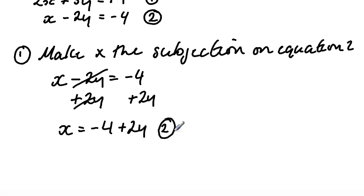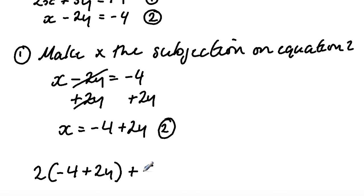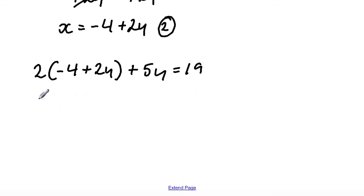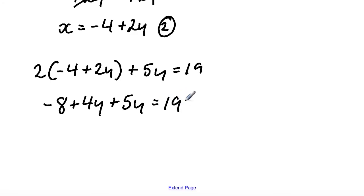What I'm going to do is substitute equation number two — the x that I made the subject — back into equation number one. So we have: 2 times open bracket minus 4 plus 2y close bracket, plus 5y equals 19. I'm then going to expand the brackets: 2 times minus 4 gives us minus 8, and 2 times 2y gives us 4y. So we have minus 8 plus 4y plus 5y equals 19. Collecting like terms, we have minus 8 plus 9y equals 19.